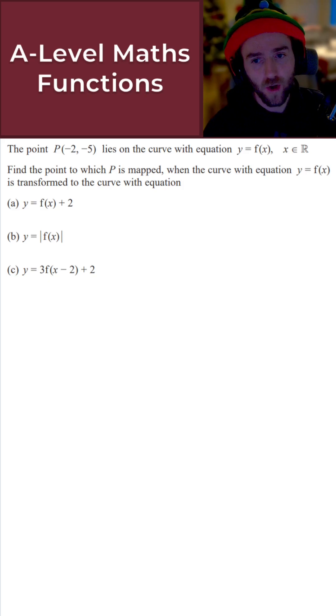For this question, the point P(-2, -5) lies on the curve with equation y = f(x). We want to find the point to which P is mapped when the curve y = f(x) is transformed to the curve with the following three equations.